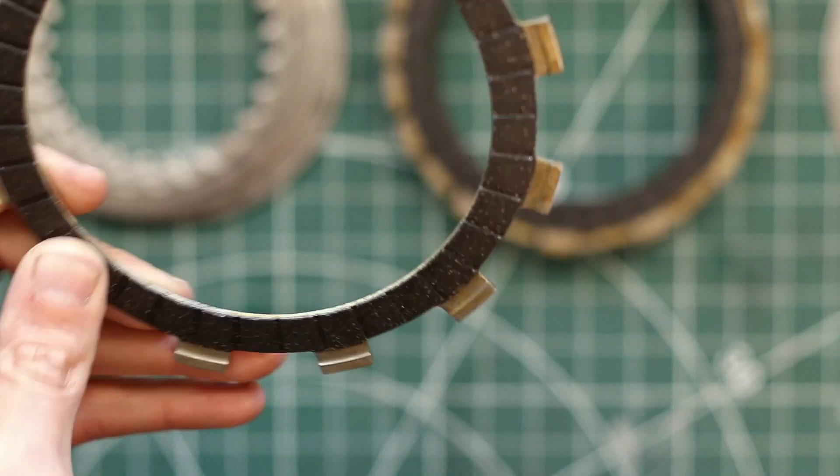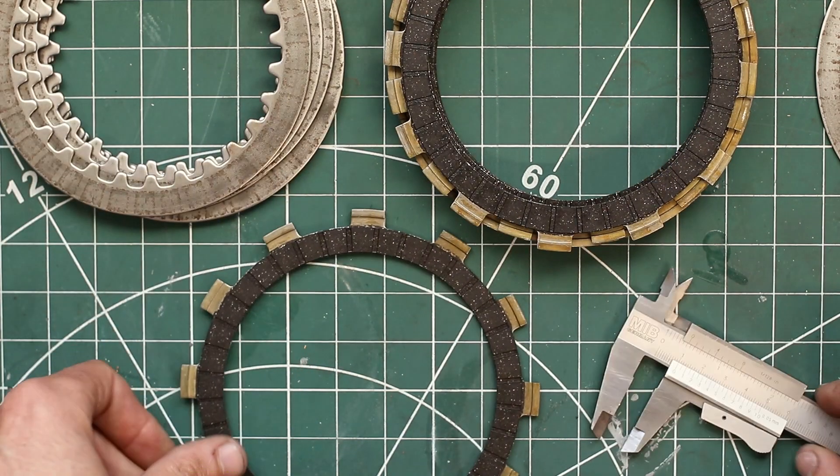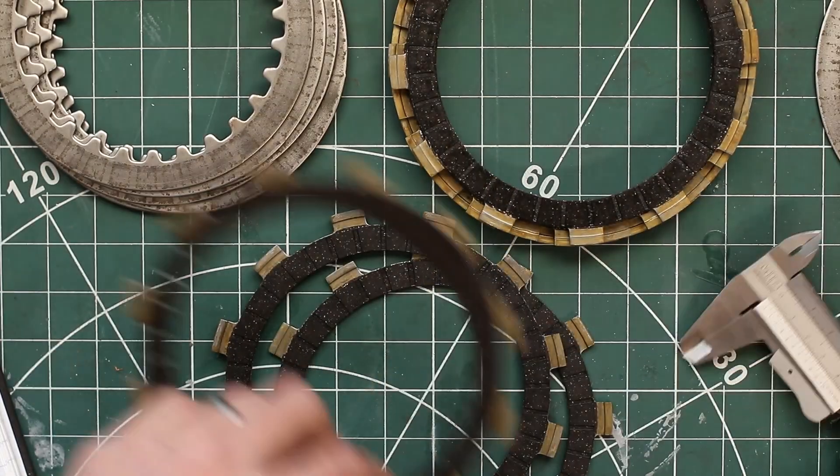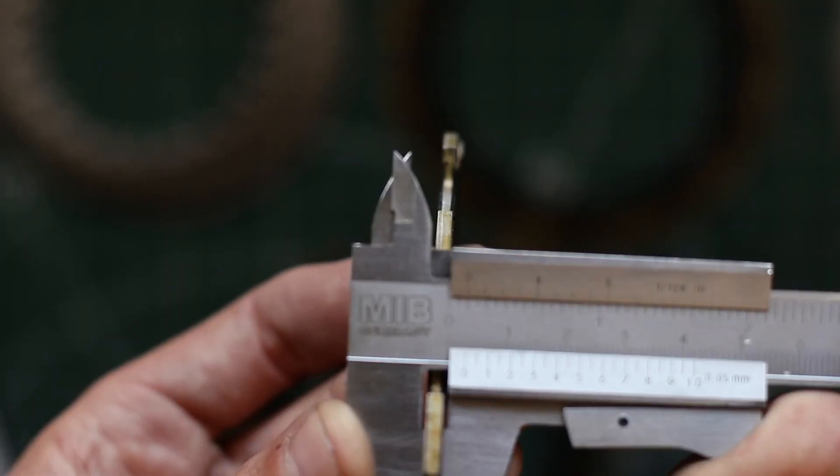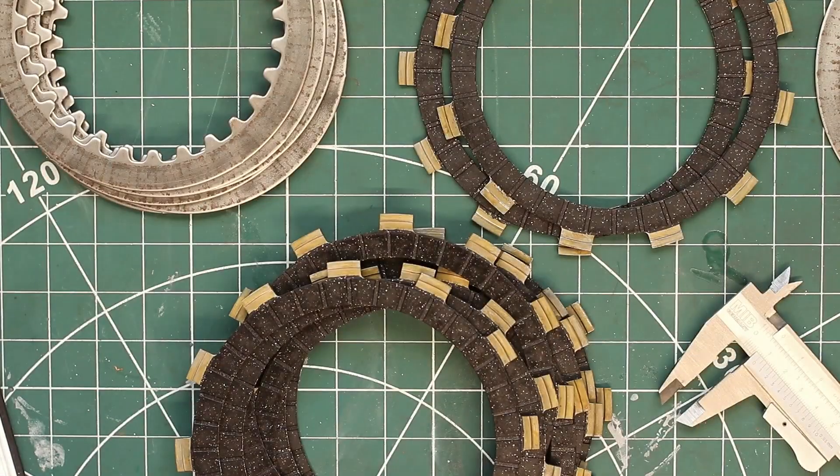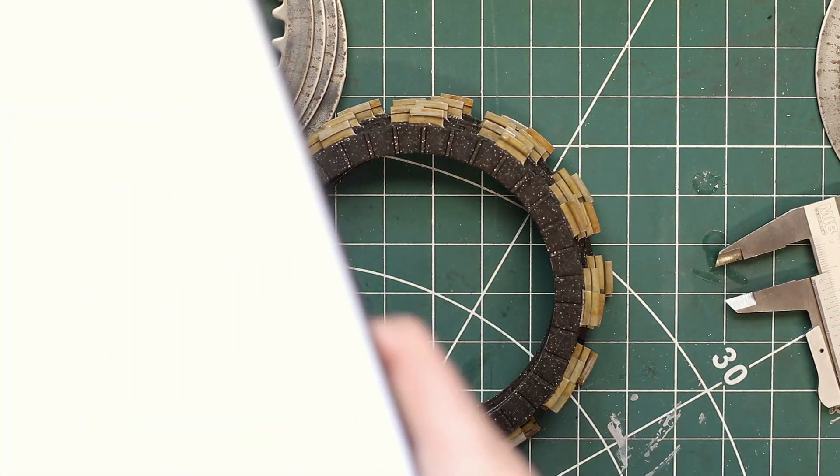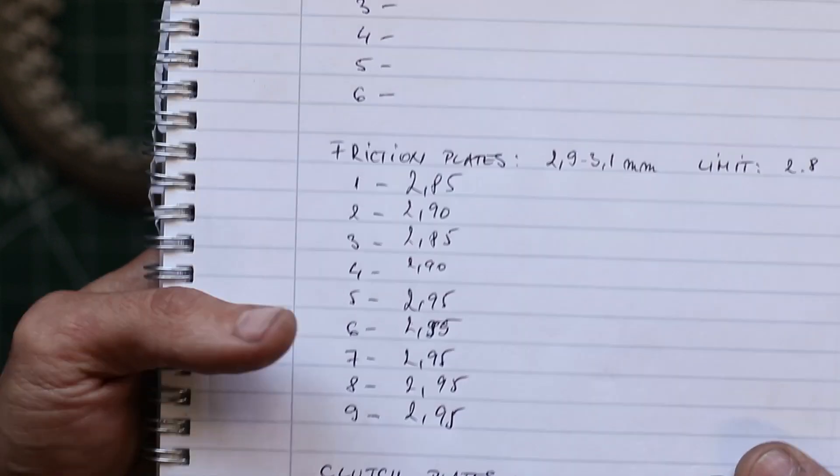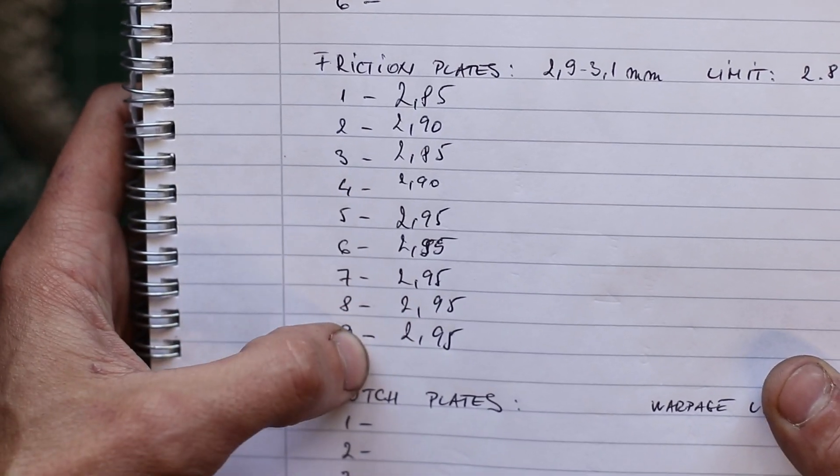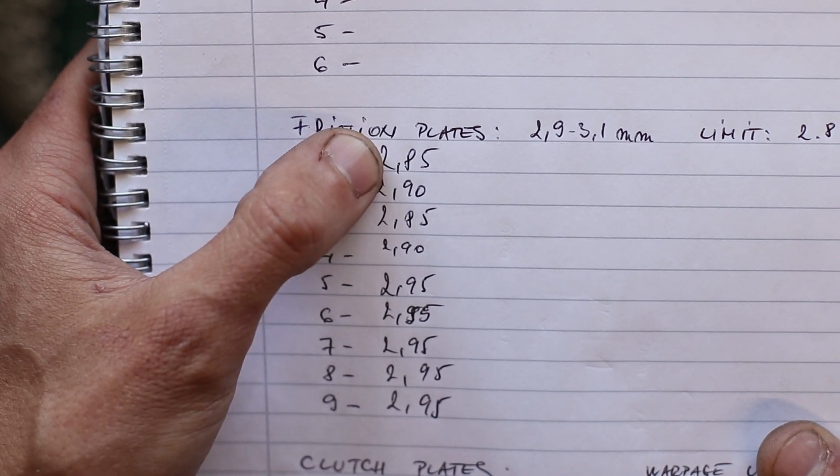So this reads 2.85, so that's very close to the limit. I'm going to write the number down and carry on and measure all the other ones as well. So now that I've measured all of the friction plates, here are all the numbers. These last ones were facing the engine block and were all stuck together, and the outer ones we can see a bit more significant wear.